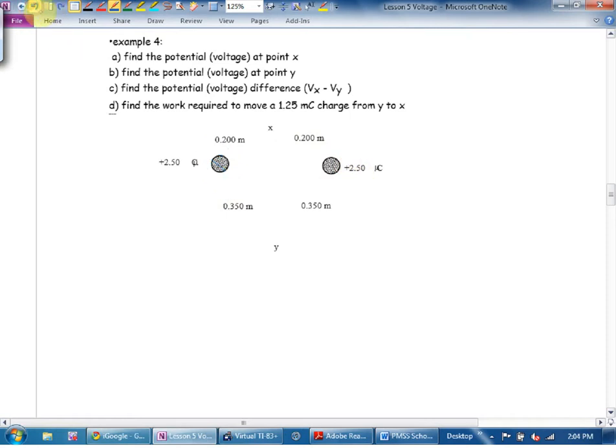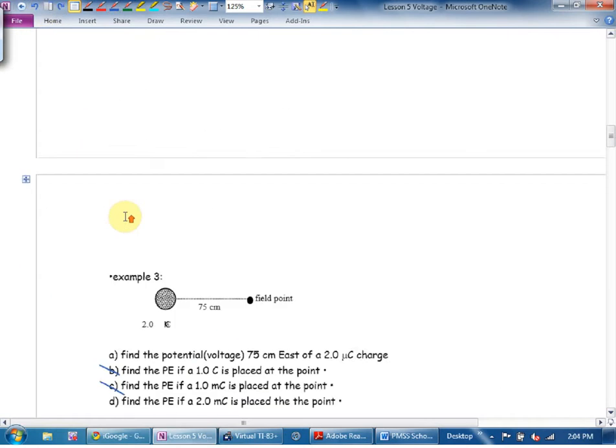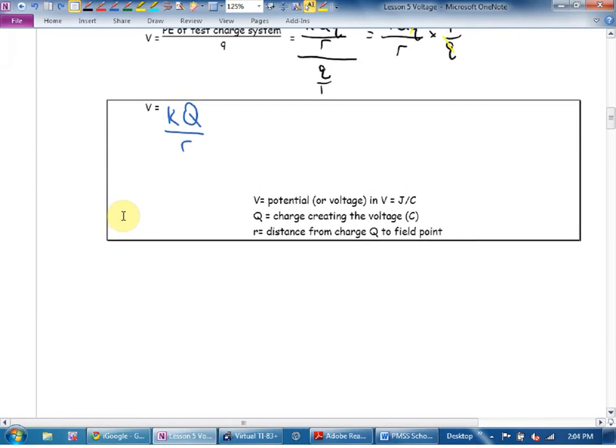Then I'm going to temporarily ignore that one and just find the voltage from this guy. Oh! Let's go back to this box here. Draw a little arrow. And write the word scalar. Because voltage is a scalar. And what that means is we're going to put in the signs. We're going to put in the negatives and positives.